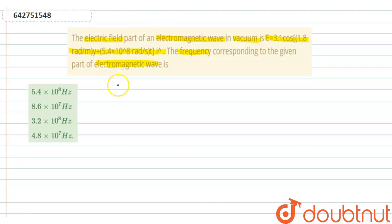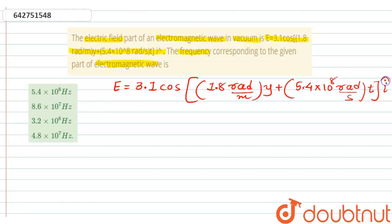Now, the given equation is E = 3.1 cos[(1.8 rad/m)y + (5.4 × 10^8 rad/s)t] i cap.